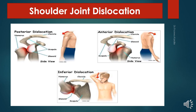The head may even displace to the quadrangular space, damaging the axillary nerve, causing paralysis of the deltoid muscle and loss of skin sensation over the lower half of the deltoid. Downward displacement of the humerus can also stretch and damage the radial nerve.